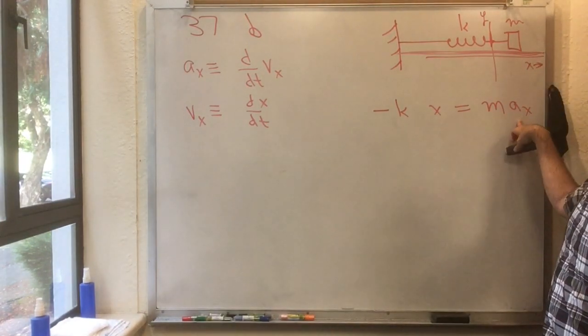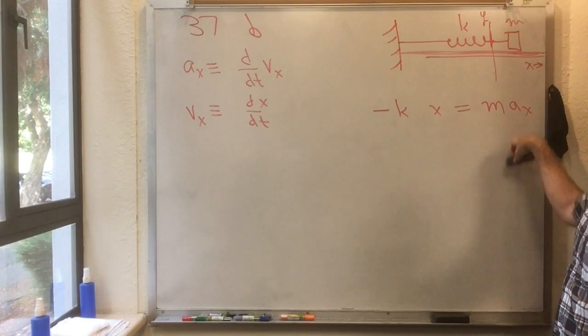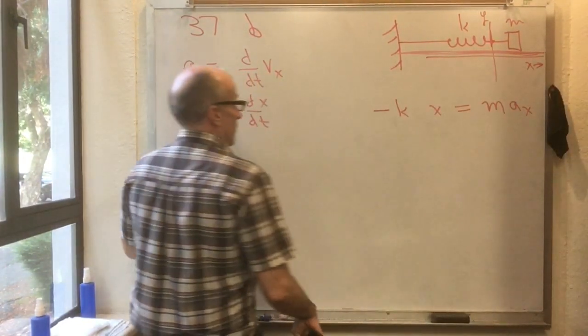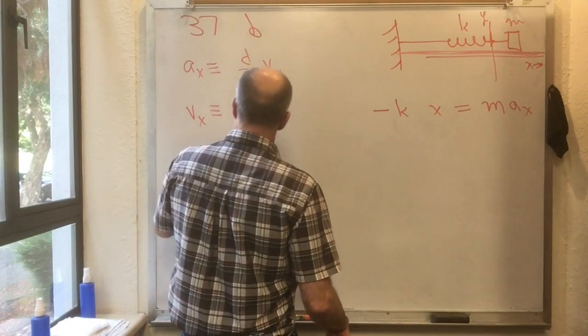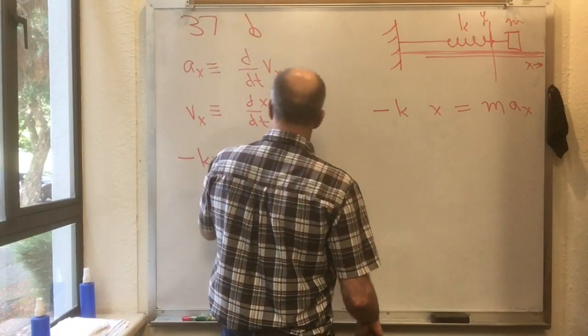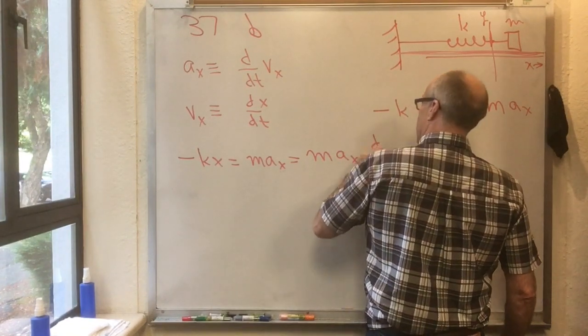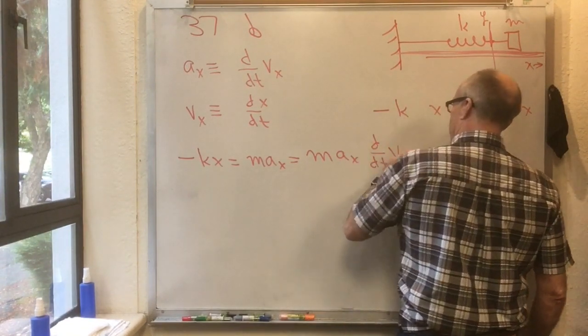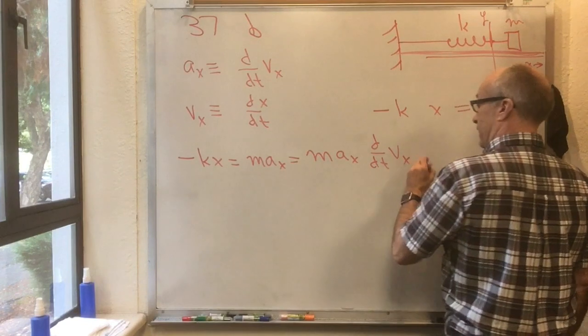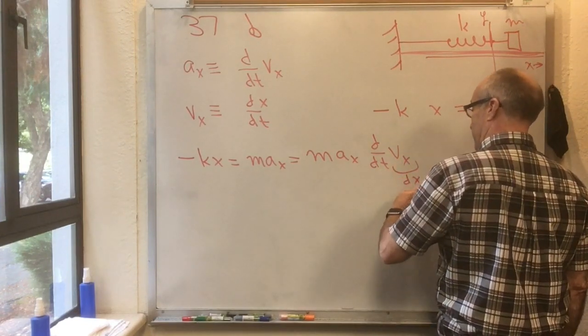And we can plug those definitions into here. Let's do that. We got minus kx is equal to m ax, but m ax is equal to d by dt of vx. Meanwhile, vx here is equal to dx dt.